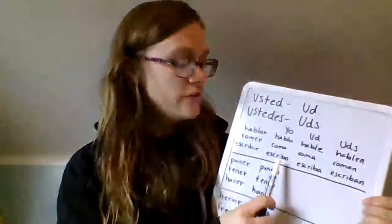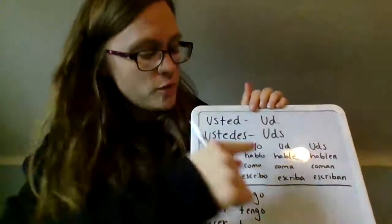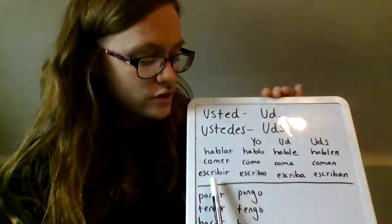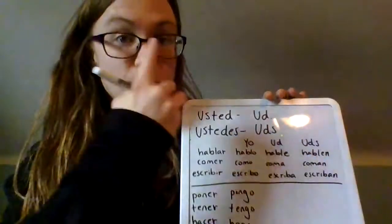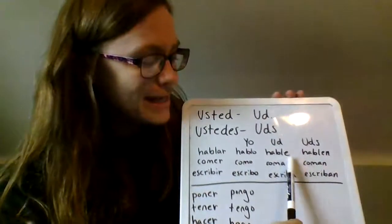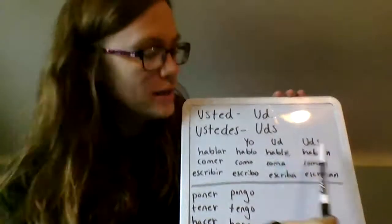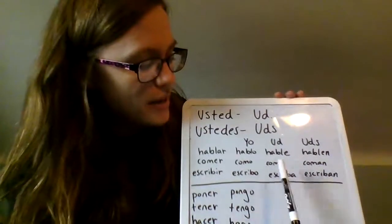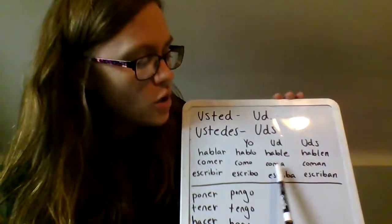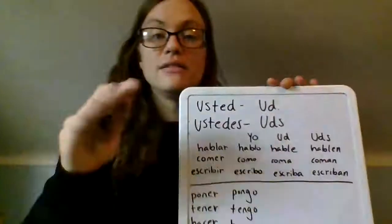The command form basics are just taking an AR, ER, or IR verb and putting it first in the yo form. AR verb hablar — yo form is hablo. Comer — yo form is como. Escribir — yo form is escribo. Then we add the correct endings. For an AR verb, we add an E ending: hable for you, hablen for you all. For an ER or IR verb, the endings are A or AN: coma or escriba for you, coman or escriban for you all. That's the basics.